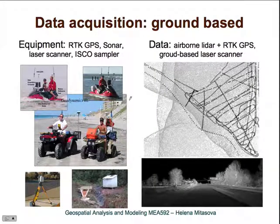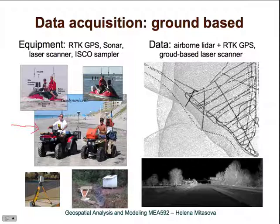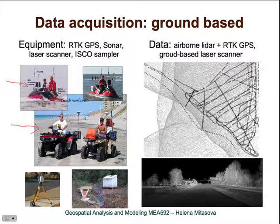Another type of ground-based data acquisition is real-time kinematic surveys, which can be mounted on different types of vehicles. Here we have a very special type of mapping in a coastal area — mapping of North Carolina beaches using real-time kinematic surveys mounted on ATVs, gathering very important information about the performance of beach nourishment. Here is a real-time kinematic survey and single beam sonar mounted on a jet ski for mapping in very shallow near-shore areas where big ships with sonars can't reach.